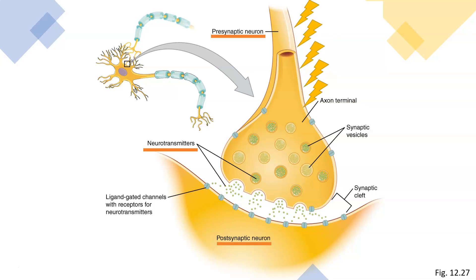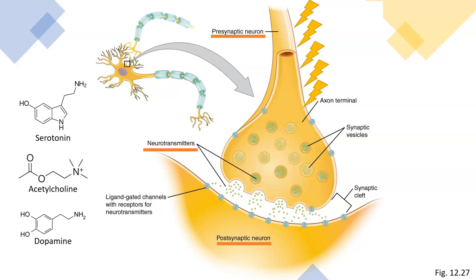Many of you have probably heard of neurotransmitters before, such as serotonin, acetylcholine, or dopamine. These chemical messengers are known as neurotransmitters and are released when the action potential reaches the axon terminal. There are many, many types of neurotransmitters. These neurotransmitters are what carry the message from one neuron to the next.